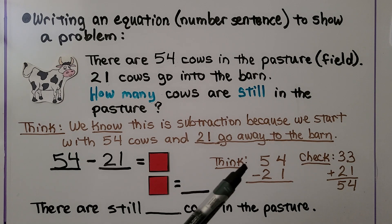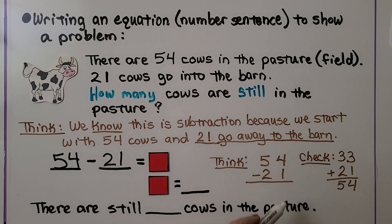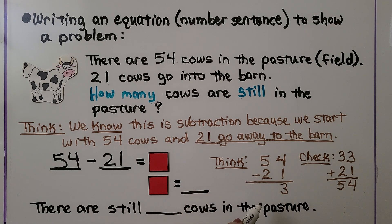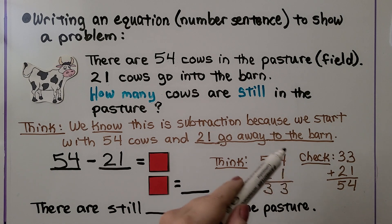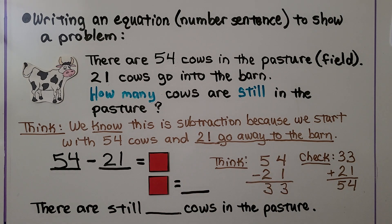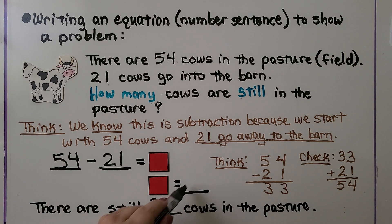We rewrite it as 54 minus 21 in place value columns. We have 1, take away 4 — that's easy, that's 3. We have 5 tens and take away 2 tens — that's 3. So that's 33 still in the pasture. We can check our subtraction by adding the difference and the subtrahend together. If it equals the minuend, we know we got the right answer. So the answer is 33 cows are still in the pasture, and the box equals 33.